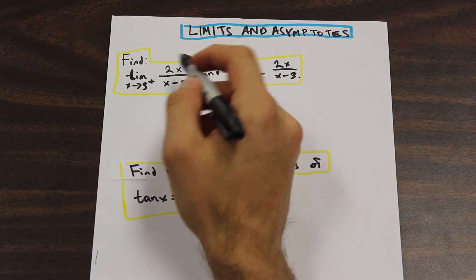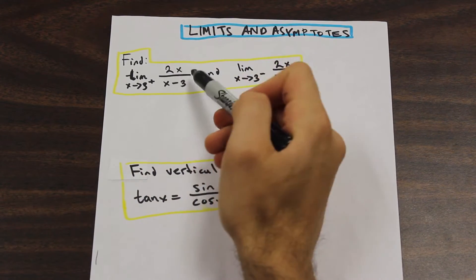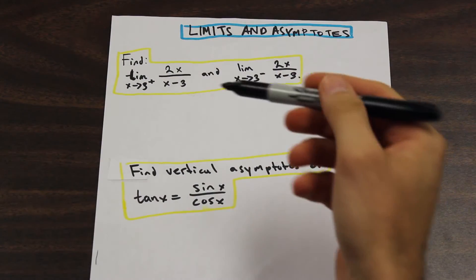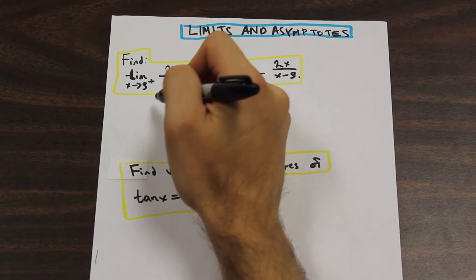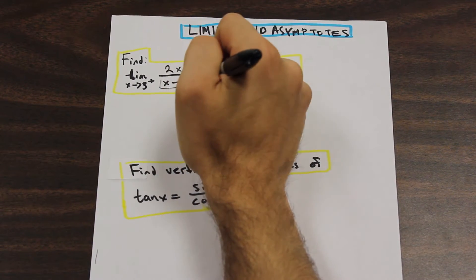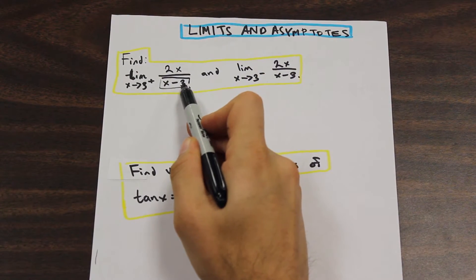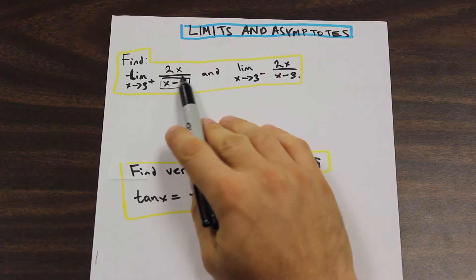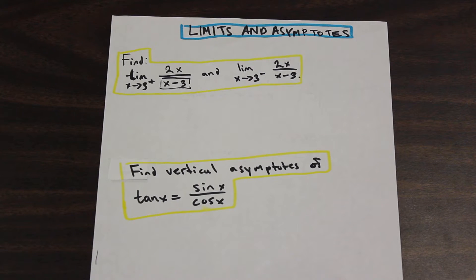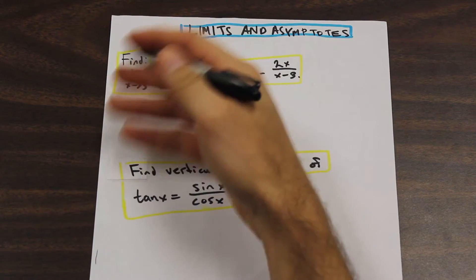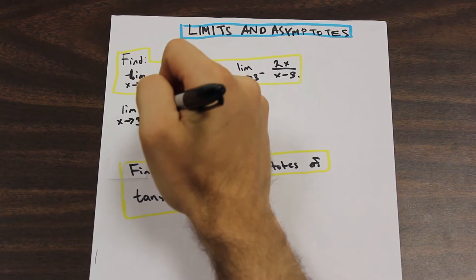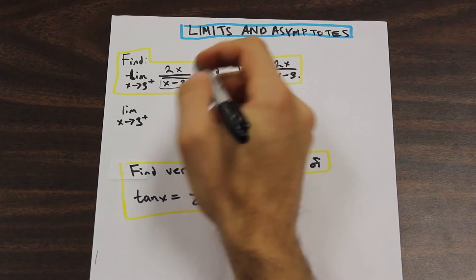So let's take a look at the first one: the limit as x approaches 3 from the right of 2x over x minus 3. If we plug in 3 and we're coming from the right side, x is a little bit larger than 3, getting closer and closer to 3 on the positive side. What that means for the denominator is it's getting closer and closer to 0 — it's becoming a very, very tiny positive number. So the function is getting bigger and bigger, and the limit approaches positive infinity.